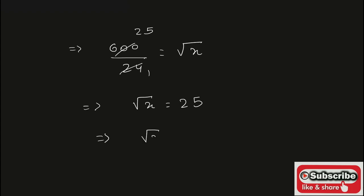We're getting square root of x whole square is equal to 25 whole square. Square and square root cancel. X is equal to 25 squared, which is 625.